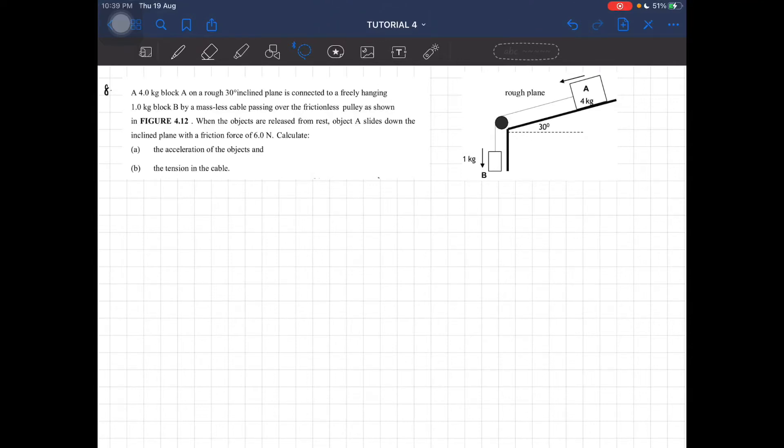Question 8: A 4 kilogram block A is on a rough 30 degree inclined plane connected to a freely hanging 1 kilogram block by a massless cable passing over a frictionless pulley. When the objects are released from rest, object A slides down the inclined plane with a friction force of 6 newtons.